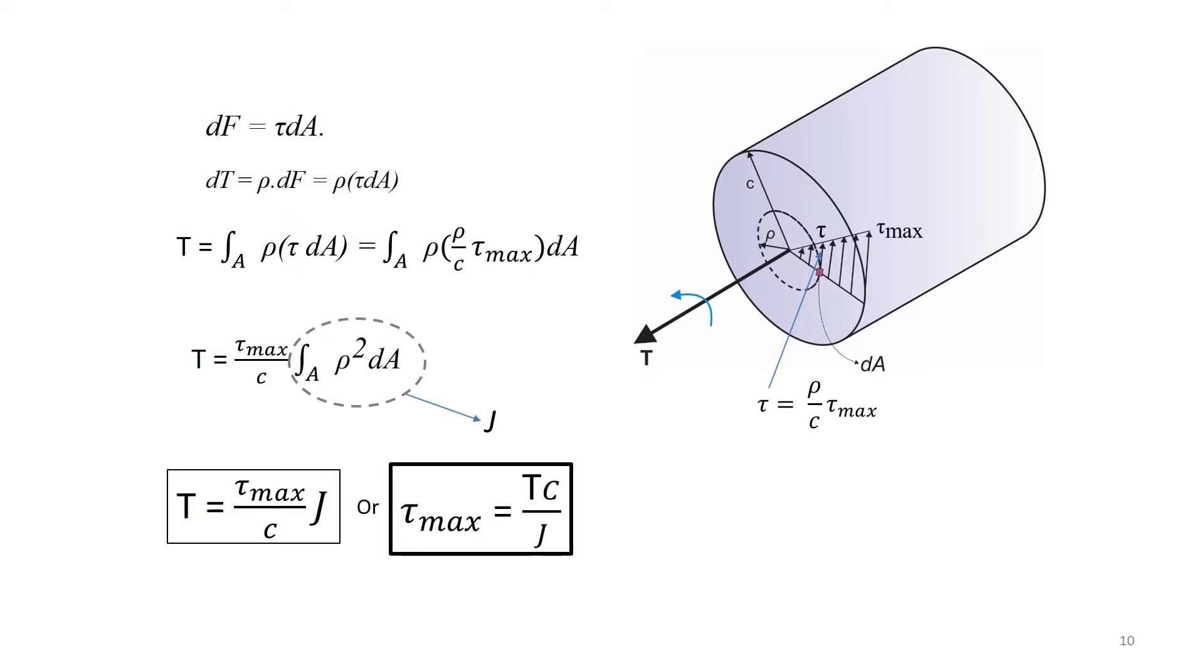And the shear stresses at the intermediate distance, rho, is tau equals T rho by J. Either of the above two equations is often referred to as the torsion formula.